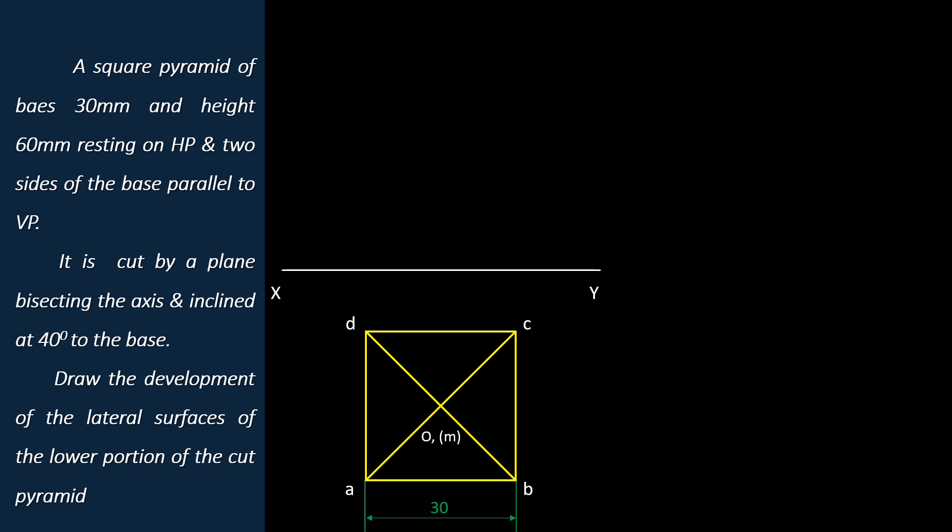Let's project the corners in top view to get the front view. As the solid resting on HP, the front views of the base corners will be on XY line. Axis height is given as 60mm. As the solid is a pyramid, we can draw the slant edges OA, OB, OC, and OD. Now the front view is also completed.